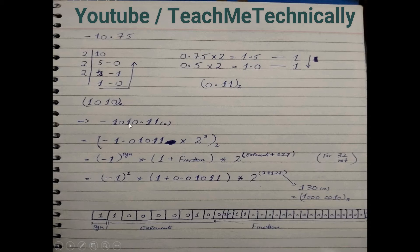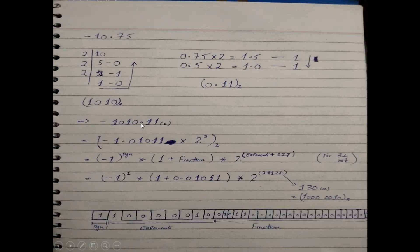Now we need to normalize this number. Normalization means there should be a single bit before the decimal point and that bit should be 1. When we move the decimal point to just after the very first bit, it becomes 1.01011 × 2^3.